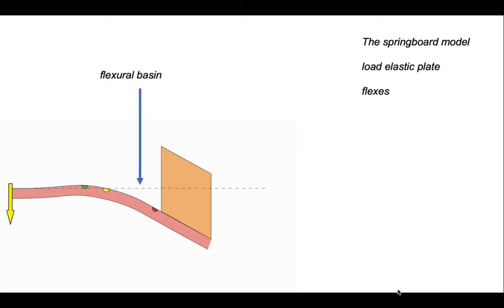The result is the adjacent area to the load subsides along with the load. And this is a so-called flexural basin. This flexure is a waveform. So under the basin, the lithosphere has gone down and just adjacent to it, the lithosphere rises slightly, creating a so-called peripheral bulge.